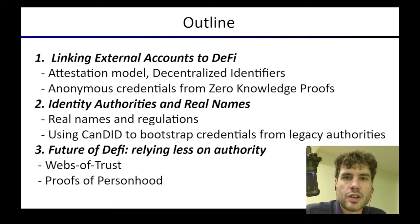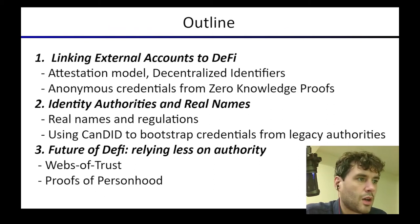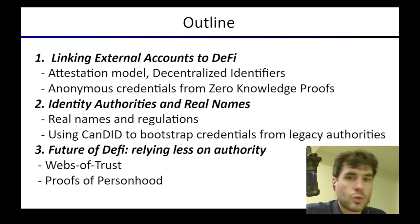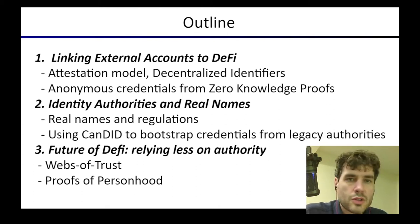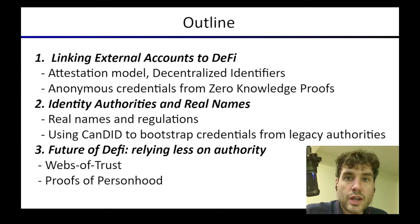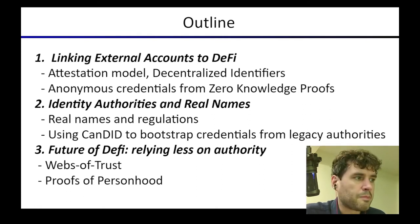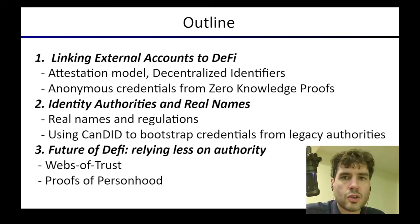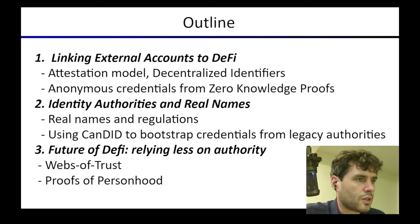Finally, we'll talk about some alternatives that I think are important for the future of DeFi — alternative forms of identity that don't rely as much on authorities like centralized issuers or state governments to issue IDs, but instead provide alternative ways to carry out some of the desired functionality that IDs play. We'll look at two ideas in particular: one is called Webs of Trust and another is called Proofs of Personhood. We'll talk about those alternatives later on.